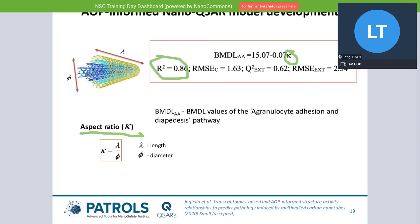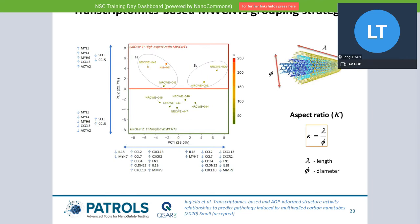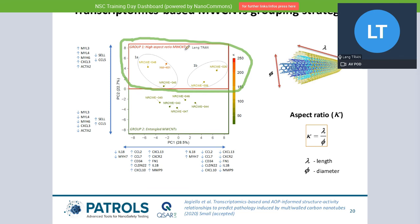They also use this model to look into transcriptomic grouping strategies. They find that you can distinguish two groups of multi-walled carbon nanotubes — those with very high aspect ratio are all grouped together in one corner. Then you have the tangled ones, meaning those that twist and turns with a lower aspect ratio, which are totally separate from the other group. This is very useful for classification and grouping purposes.